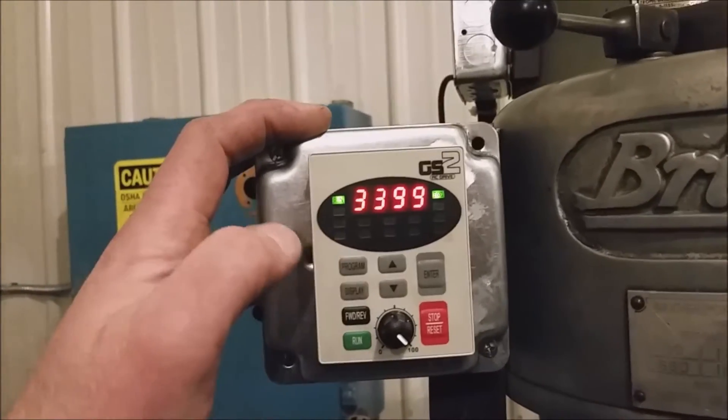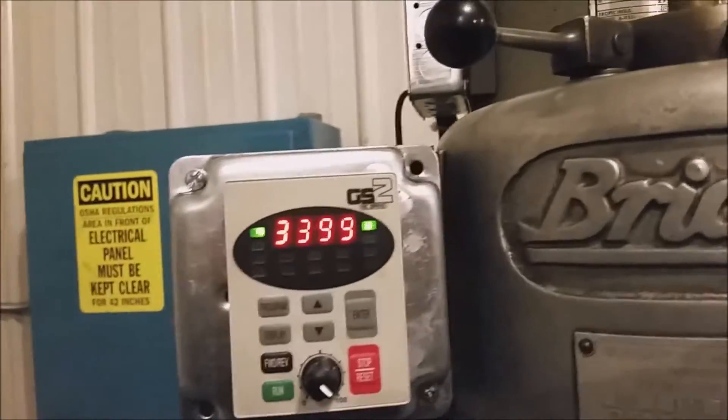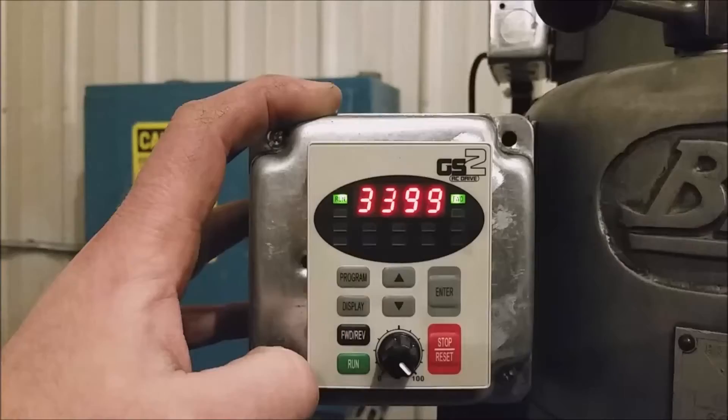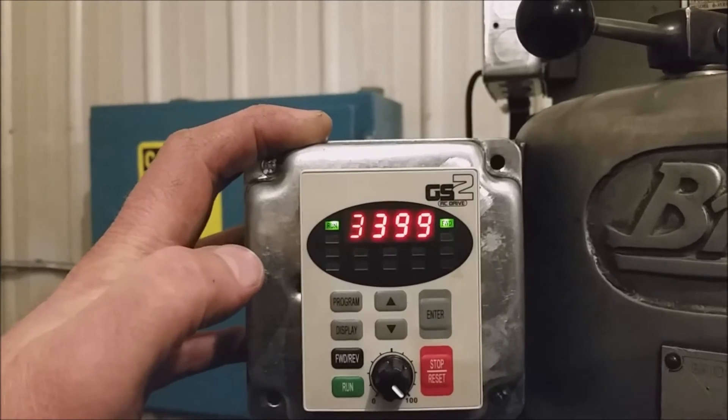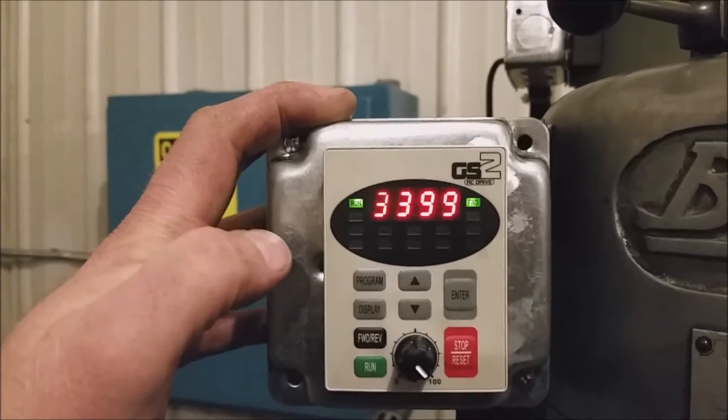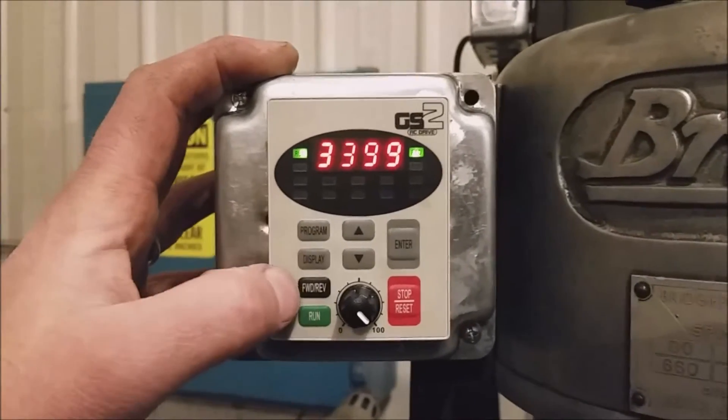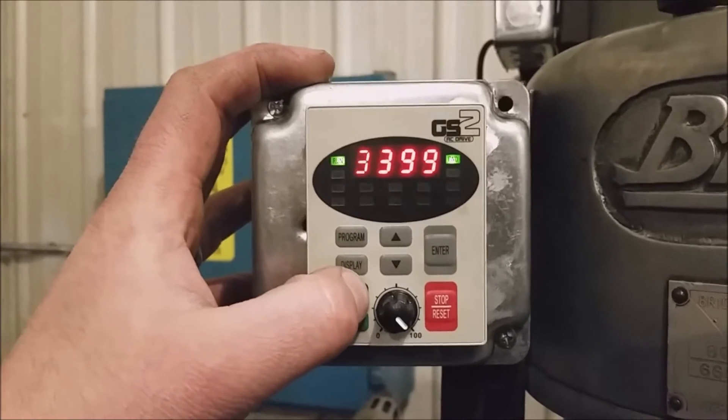Hit display, it'll give me my RPM right there, 3399. Well, I put in 3400, so that's pretty close. What's interesting about this is if I want to reverse directions for some reason, I can't imagine that you'd be going this fast and need to reverse directions, but anyway, this is the way it is.